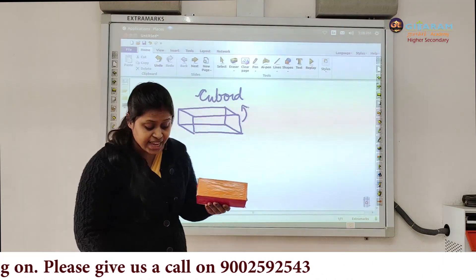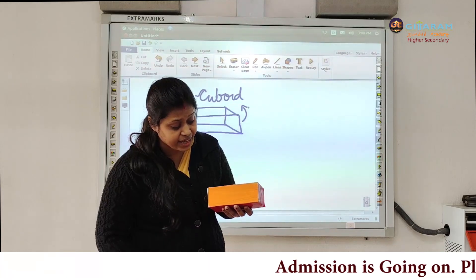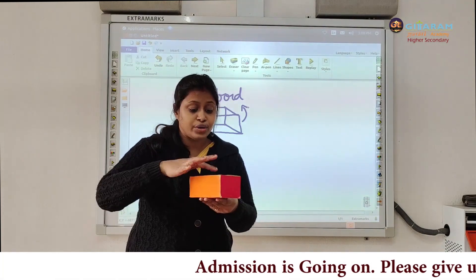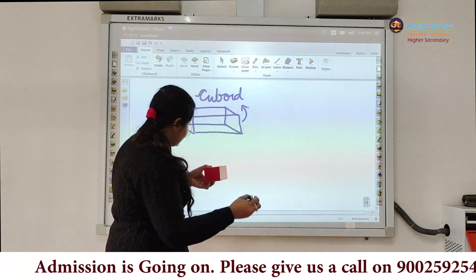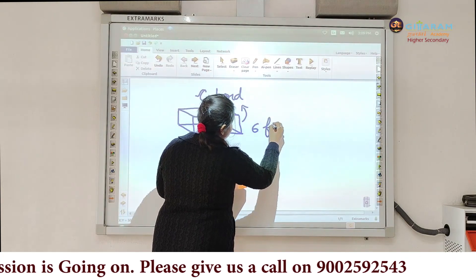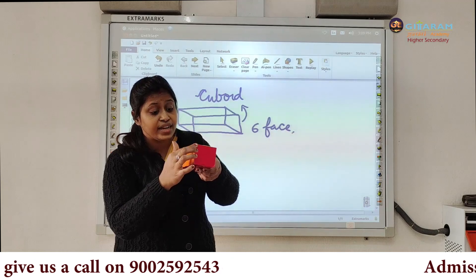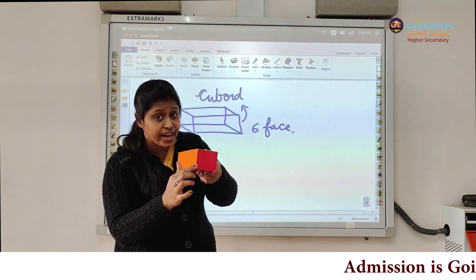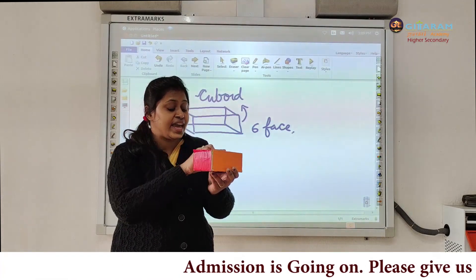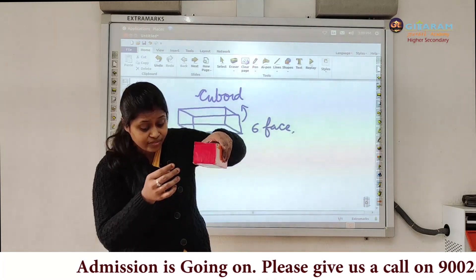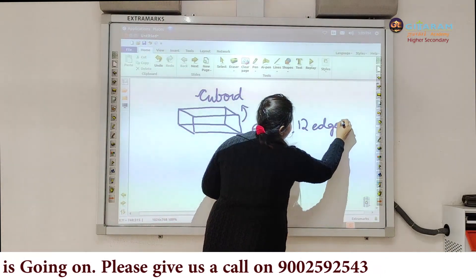So how many faces does a cuboid have? It is having rectangular faces. How many faces are there? One, two, three, four, five, six. Six faces. So a cuboid also has six faces. Now coming to the edges — two faces are joined in a line, this is an edge. One, two, three, four, five, six, seven, eight, nine, ten, eleven, twelve. Twelve edges — E-D-G-E-S.